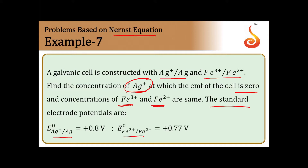Whichever electrode has the higher standard reduction potential (SRP) acts as the cathode, and whichever has the lower SRP acts as the anode. Since the higher SRP value belongs to the silver electrode, silver acts as the cathode and iron acts as the anode.